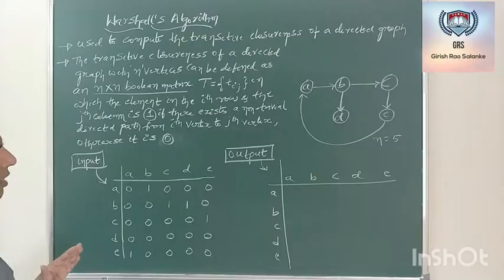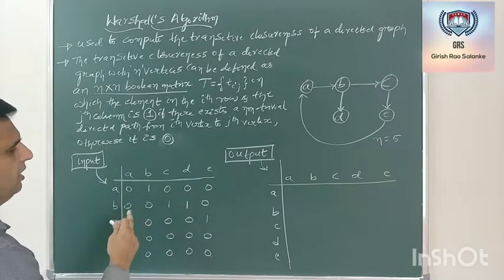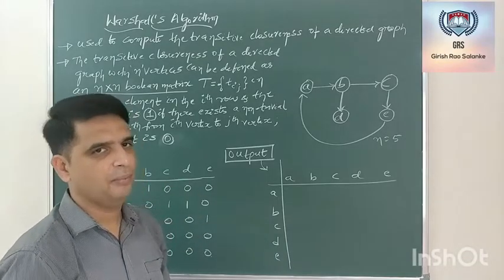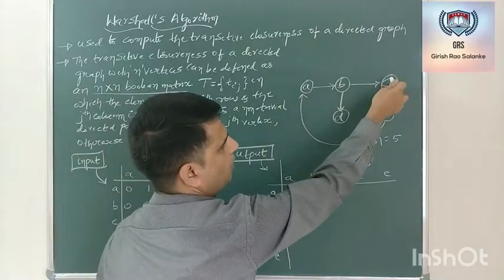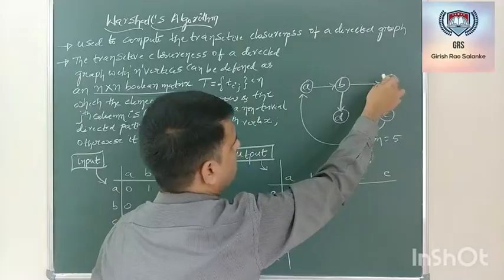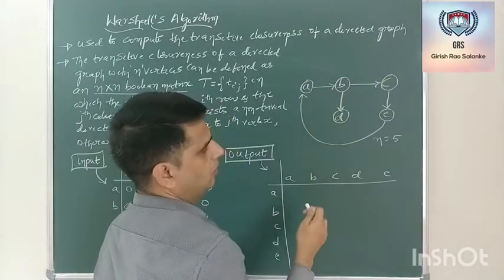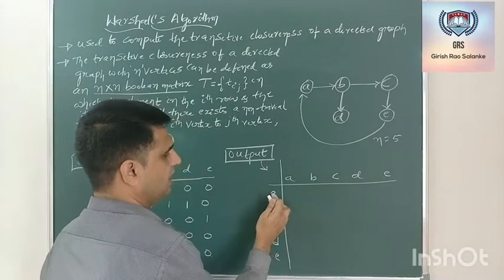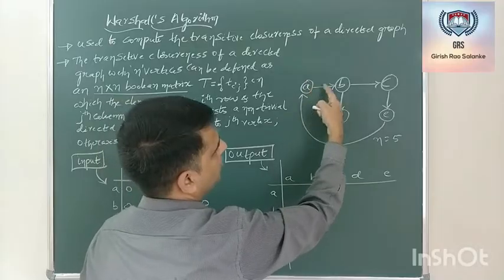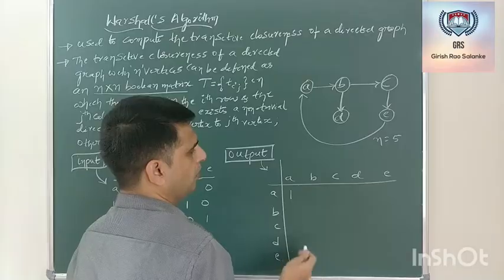From the input, if there is a direct edge from one node to another node, it can be represented with 1. On applying the transitive closure, if there is a path from one node to another — not necessarily a direct path — if I can reach C with the help of B, then it implies from A I can reach C also. With respect to A, check whether A is reachable to A. If I take this path: A to B, B to C, C to E, and E to A — even A to A is also reachable, so this should be 1.